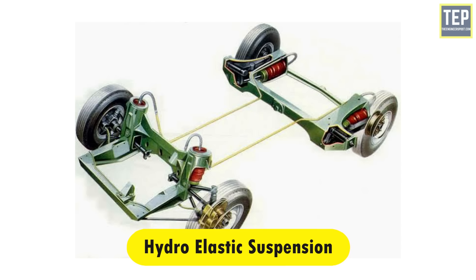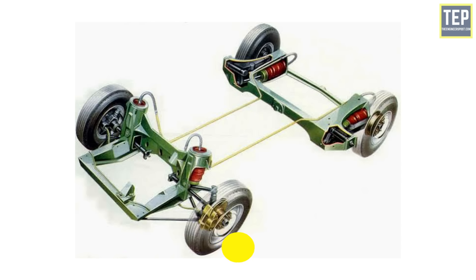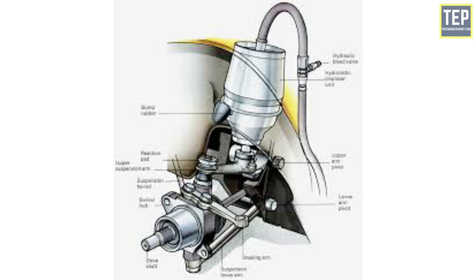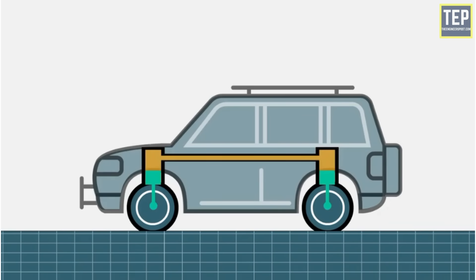In this type of suspension system, there is an integrated fluid-filled displacer fitted to each wheel. The front and rear units were connected, making them two pairs, filled with a mixture of alcohol, water, and additives to prevent corrosion. When a wheel on one side of the car hits a bump, the fluid is displaced and causes the unit on the other wheel to react. In this way, a bump at the front makes the rear of the car rise to a corresponding height, so the car always remains level.